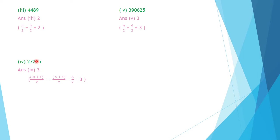Next question: 27,225. This number has 5 digits, and 5 is an odd number. So we use n plus 1 by 2: 5 plus 1 by 2, equal to 6 by 2, equal to 3. In the square root of 27,225, we have 3 digits.